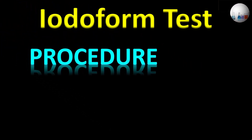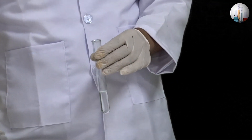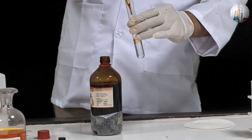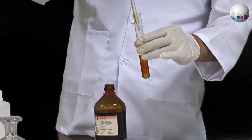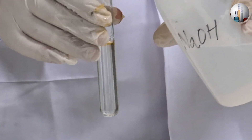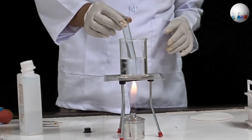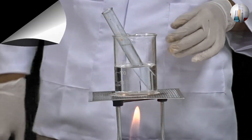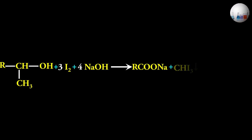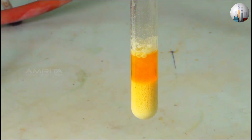Now let us see the procedure. Take a small amount of the organic compound in a test tube. To this, add 1% iodine solution using a dropper. Now add dilute sodium hydroxide solution until the color of iodine is discharged. Heat the mixture gently in a water bath for a few minutes. Alcohols with the structure CH3-CH(OH)- react with iodine in the presence of NaOH to give sodium carboxylate, iodoform, sodium iodide, and water. The iodoform formed is a yellow precipitate.